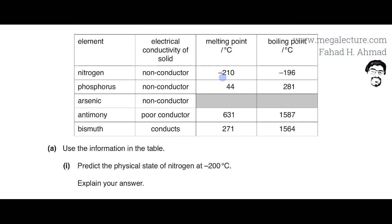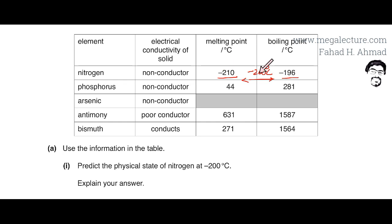We're given the melting point and boiling point of nitrogen. Minus 200°C is a temperature between those two values: minus 210°C is the melting point and minus 196°C is the boiling point. On a number line, minus 200 comes in the middle, so the state of nitrogen is liquid at minus 200°C. Above the boiling point it's a gas, below the melting point it's a solid, and in between it's a liquid.